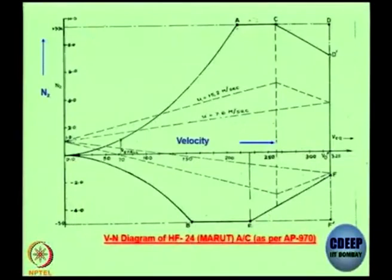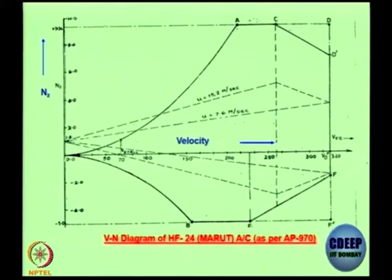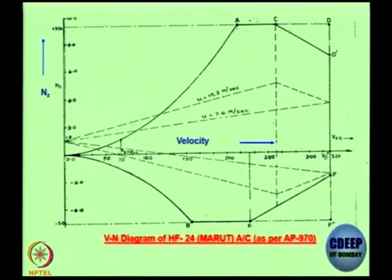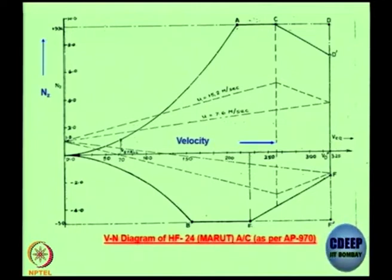This is the V-N diagram of an aircraft called the HF-24 Marut, one of the first transonic fighter aircraft designed in India. It was designed by a team led by Dr. Kurt Stang from Germany and Dr. V.M. Ghatge from India. At the time it was designed, it was considered one of the best aircraft in the world in its category. The x-axis of the V-N diagram is velocity — not normal velocity but a special velocity — and the y-axis is the load factor, specifically not the y-load factor but the z-load factor, as we will see.